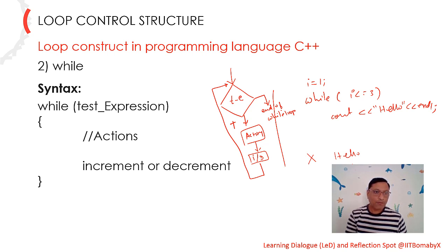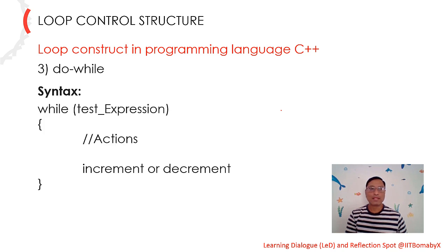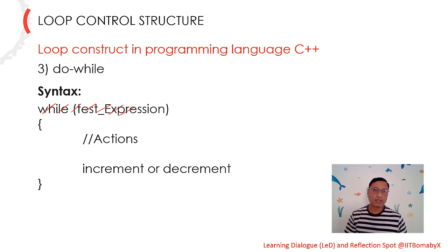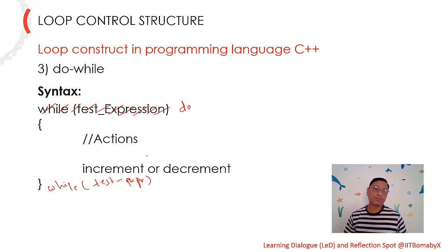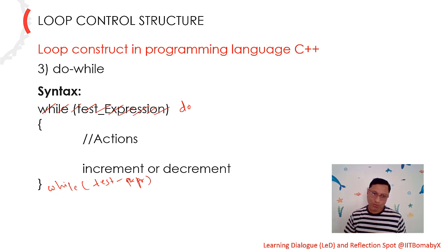Now let me go to the third programming construct, that is do-while. Here is the syntax. It is the same as the while syntax — you just need to add the do keyword at the beginning and move the while condition to the end of the loop after the closing curly bracket.